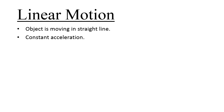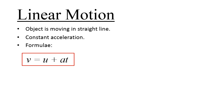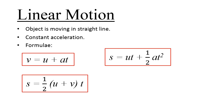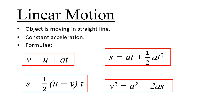There are four formulae which we need to remember for linear motion. The first one: v equals to u plus at. Second one: s equals to half of (u plus v) times t. Third one: s equals to ut plus half at squared. And the fourth one: v squared equals to u squared plus 2as.